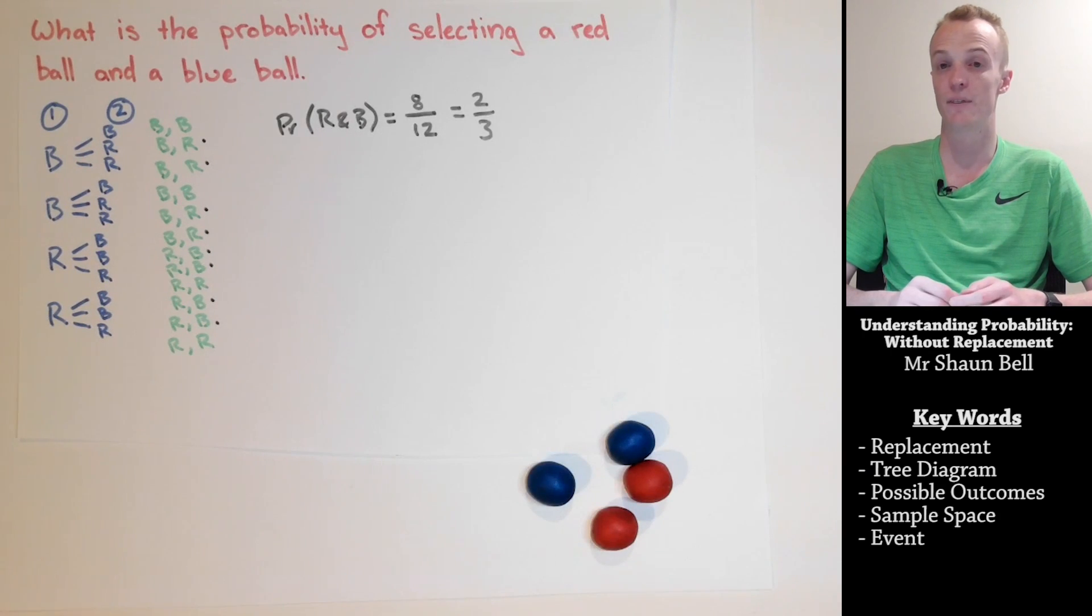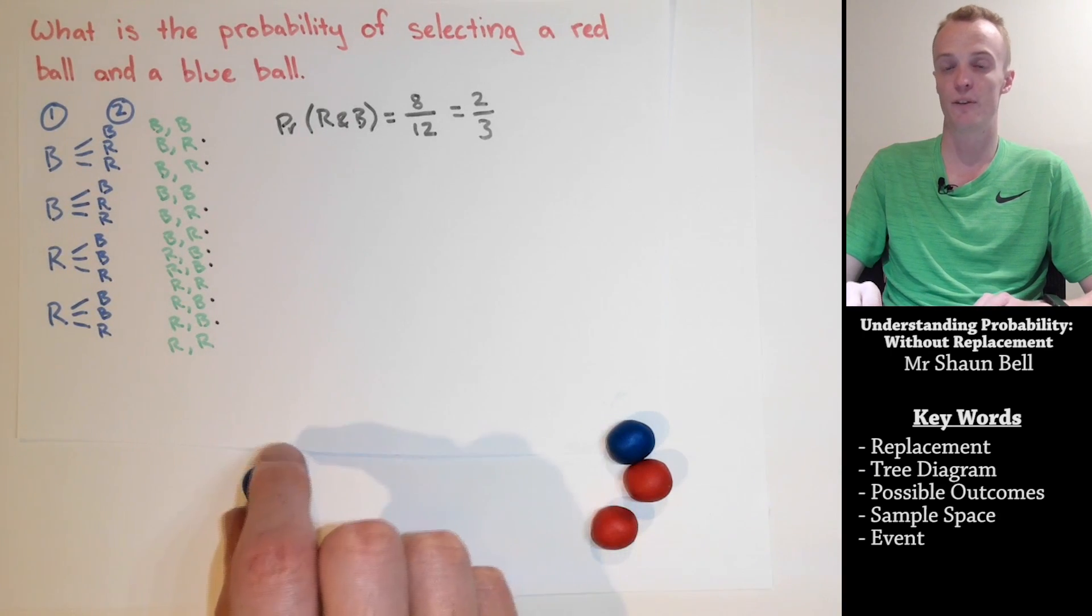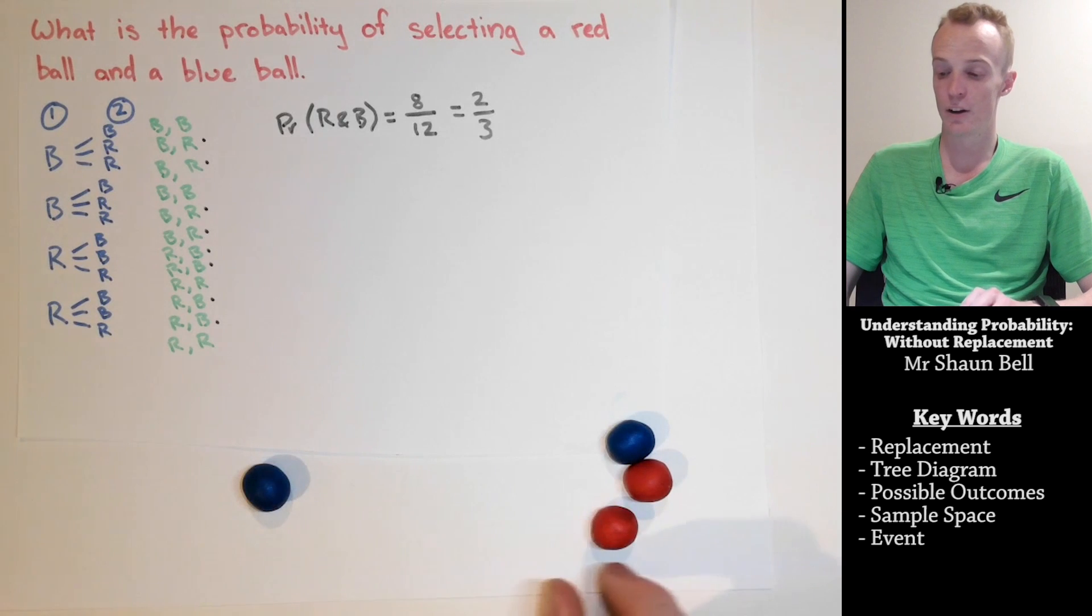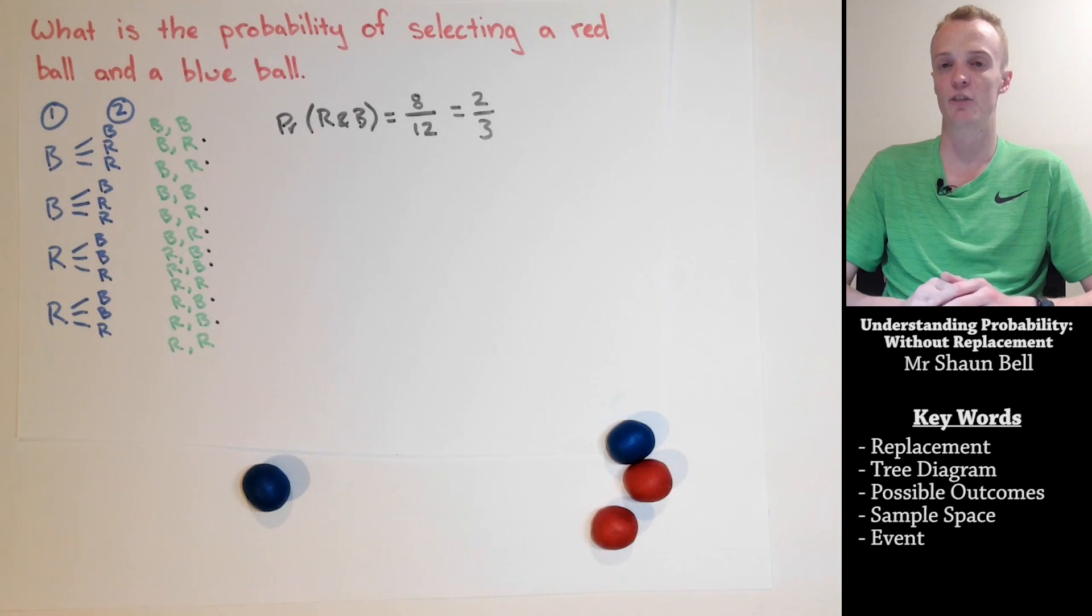Now the primary reason for that is once I've made my first selection here, when I go to make my second selection, the probabilities of getting a red and a blue ball have vastly changed and this influences the results.